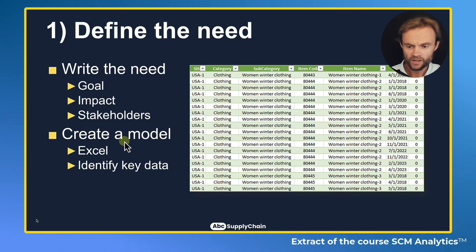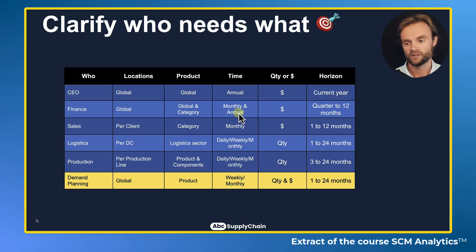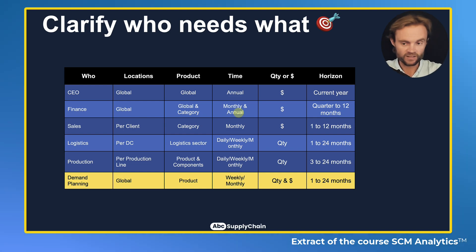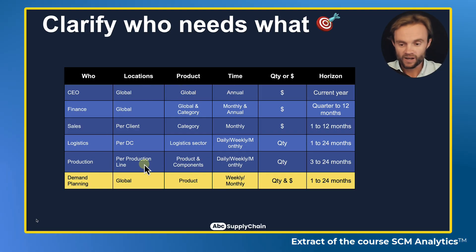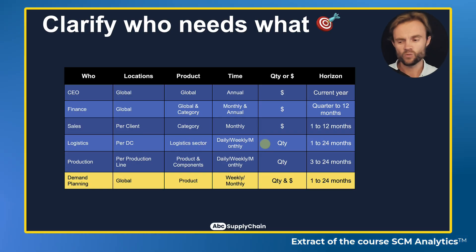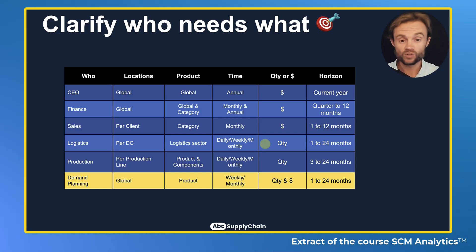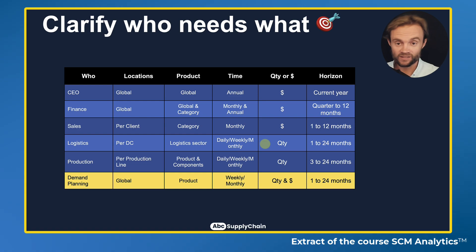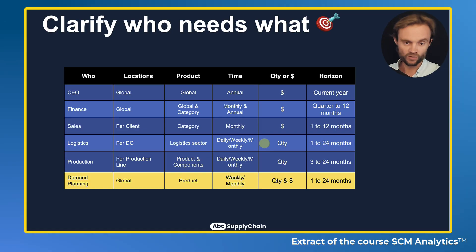It's very important to clarify who needs what. Is it only for you, or for different people in the company? For example with forecasting: the CEO just wants the global forecast, production needs it per line, and logistics needs it per DC and logistics sector. You also need to specify frequency — weekly, daily, monthly, quarterly — and the time range, like the last six or twelve months. Do you need quantity, dollars, or both? Be very specific.